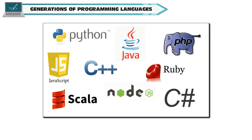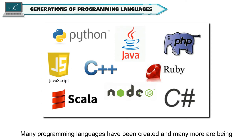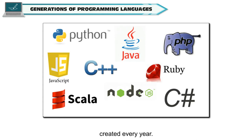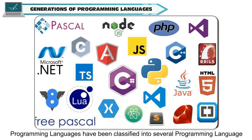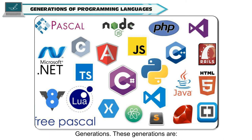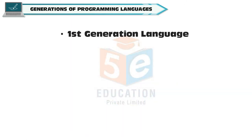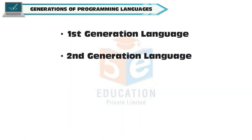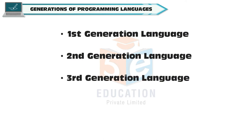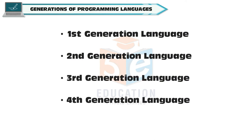Generations of programming languages. Many programming languages have been created and many more are being created every year. Programming languages have been classified into several programming language generations: 1st generation, 2nd generation, 3rd generation, 4th generation, and 5th generation language.